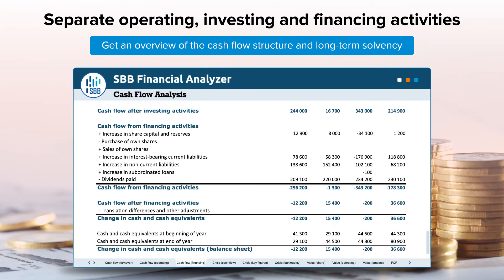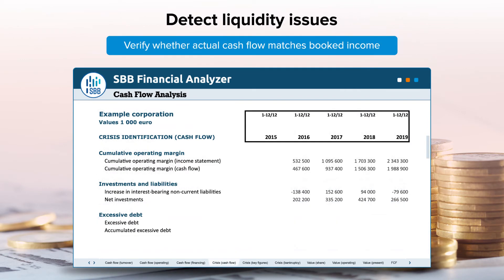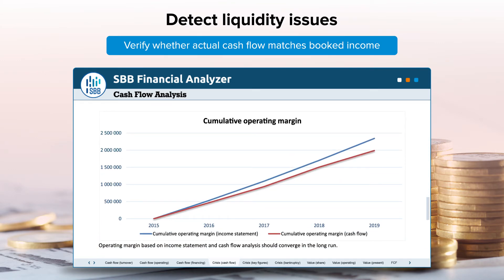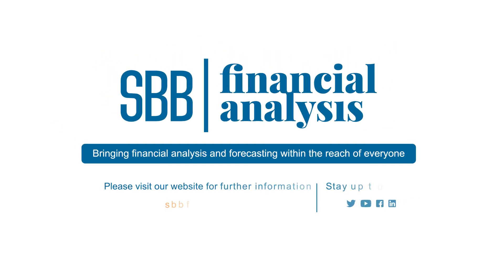Separation of operating, investing, and financial activities provides an overview of the cash flow structure, solvency, and potential for future growth. Long delivery times, extended payment terms, or overdue receivables may drain cash reserves even when sales are booming.